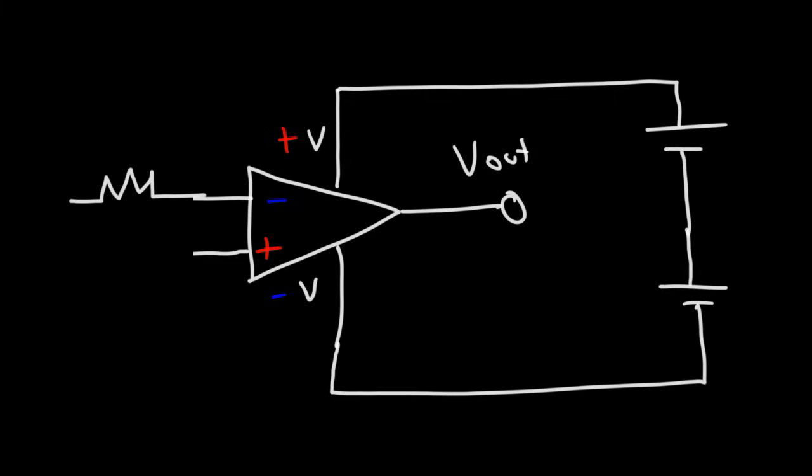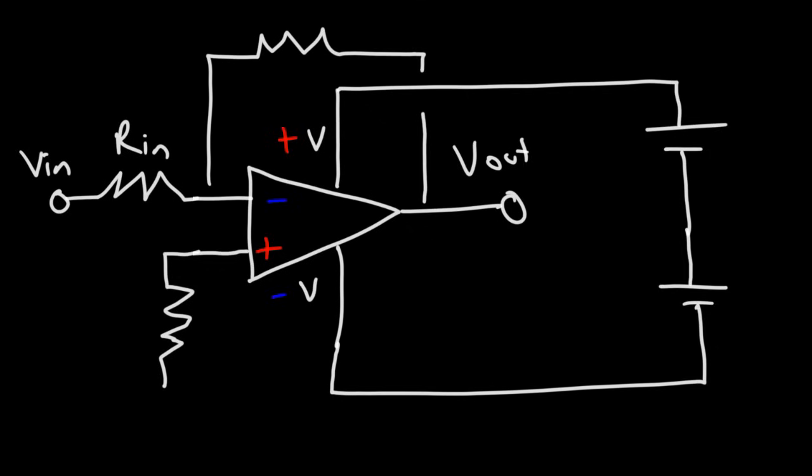Let's turn this into an inverted op amp. So this is the input resistance. Now we do need our feedback resistor. This is going to be R. And we need to connect this to the ground. And the ground connection is here as well.